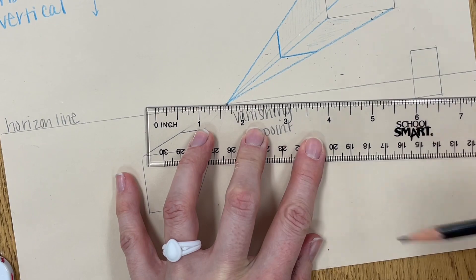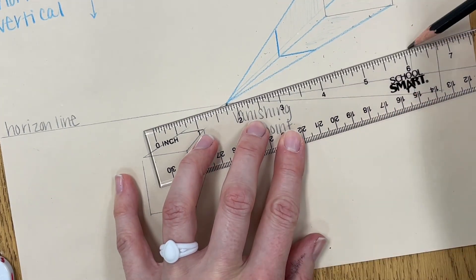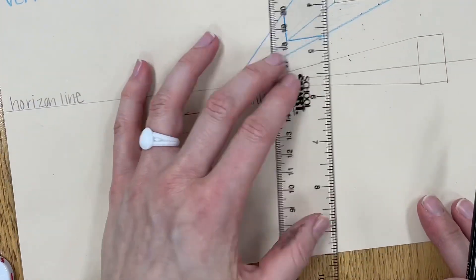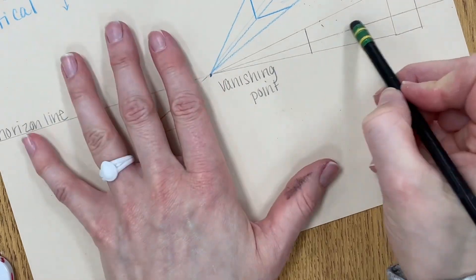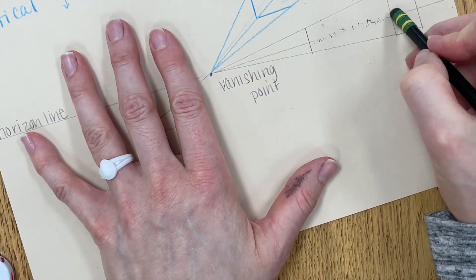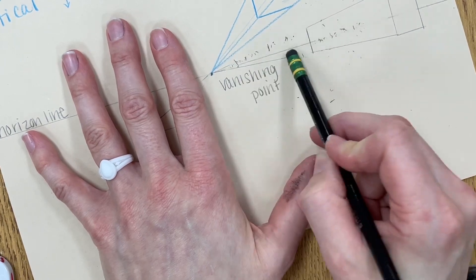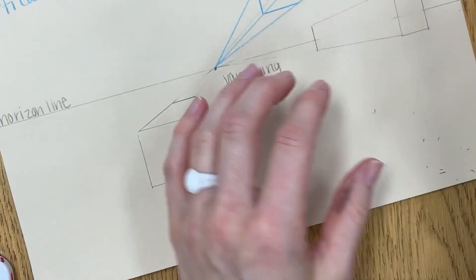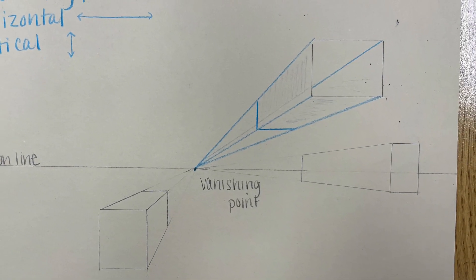Then you'll notice when you draw the one that is on the horizon line it has less lines to add because of its location. You're just drawing the top, the bottom, and the one side because we can't see the top or the bottom in this location. Then remember if you want to see the inside of the box you would have to add those extra lines. Here I am erasing the horizon line that is showing.